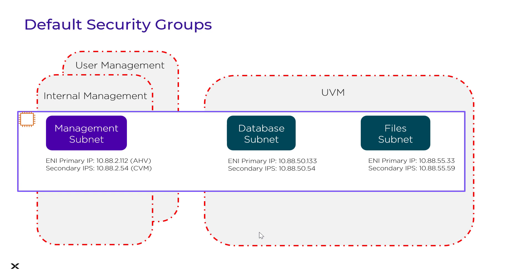In this environment, the security groups get attached to the ENIs — the Elastic Network Interface — which in AWS, due to native networking, we can have up to 15 different ENIs that get attached based on the powered-up UVMs. Each ENI can handle 50 IP addresses; we take one for the primary IP, so we're left with 49. Once those get consumed and more UVMs have to be powered on, we add another ENI and carry on. This is all done behind the scenes.